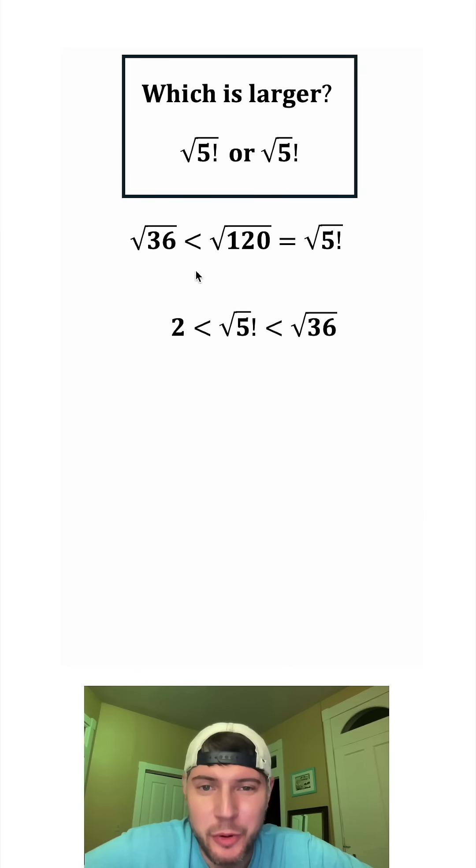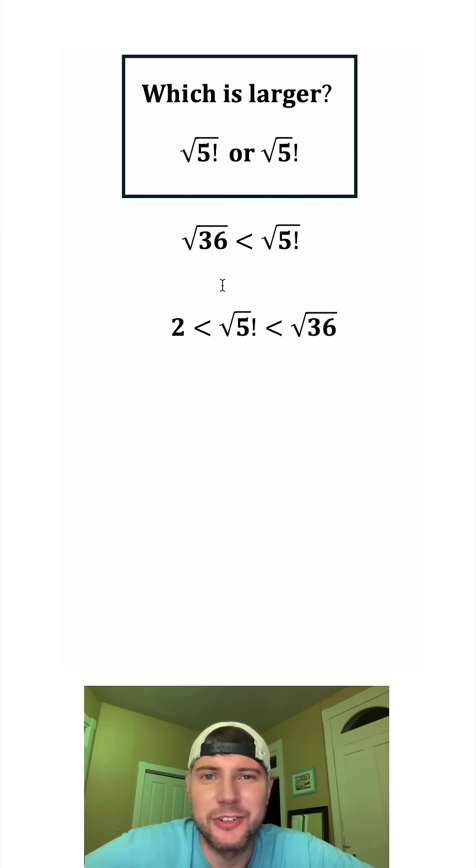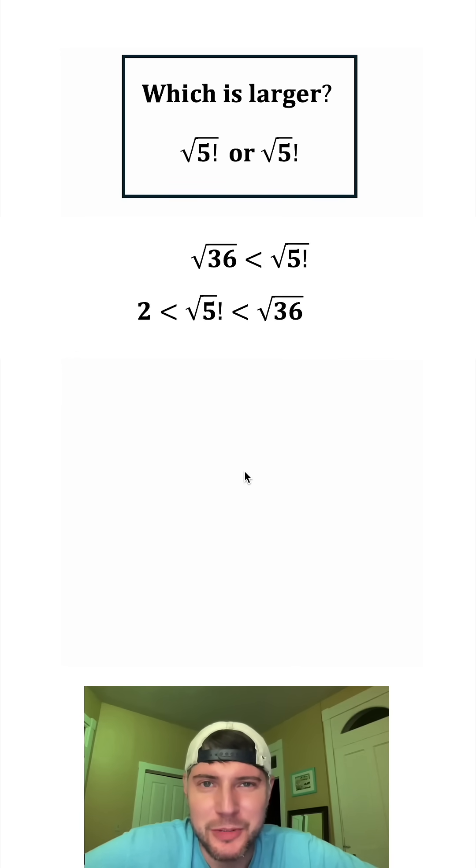And then we know that the square root of 120 is equal to the square root of 5 factorial. So let's replace the square root of 120 with square root of 5 factorial. Now both of these contain a square root of 36. Let's smash them together.